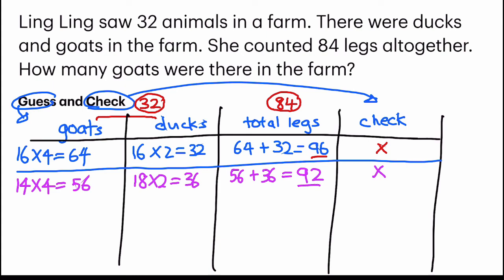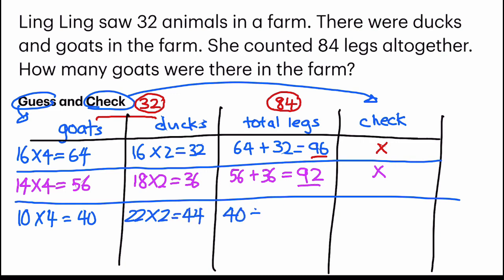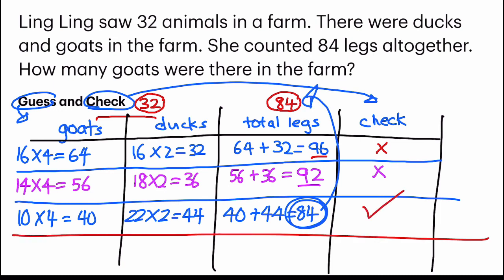Let's try with 10 now. 10 times 4 gives me 40. If I have 10 goats that means there will be 22 ducks. 22 times 2 gives me 44. Adding up the total number of legs, 40 plus 44 gives me 84. And 84 meets the criteria of 84. We've gotten the answer. Now answering the question, they asked for number of goats. So, number of goats would be 10 here. And that's my answer.